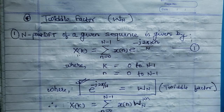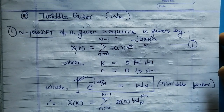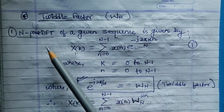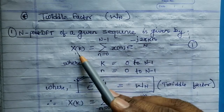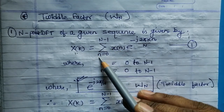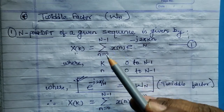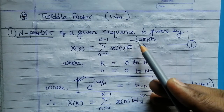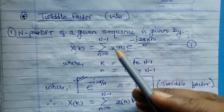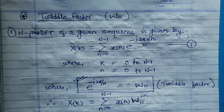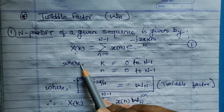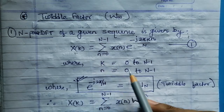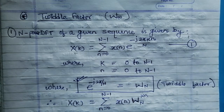First of all, we will try to extract the twiddle factor from the given DFT formula. The N-point DFT of a given sequence is given by: X(k) equals summation from n equals 0 to N minus 1 of x(n) times e raised to power minus j 2 pi k n divided by N. This is our direct formula to calculate the N-point DFT, where k equals 0 to N minus 1 and n equals 0 to N minus 1.